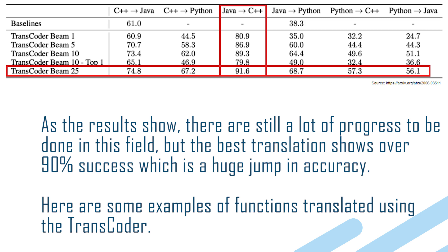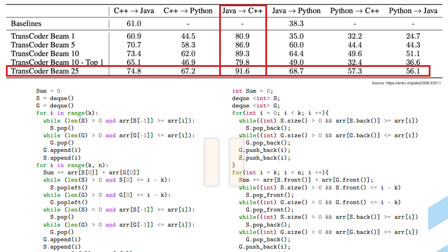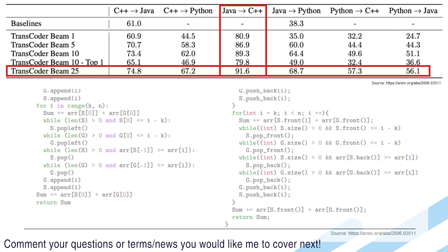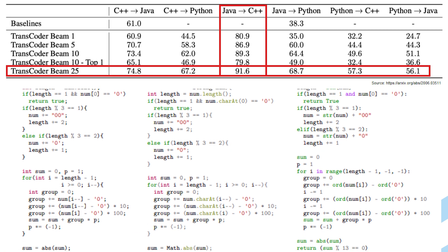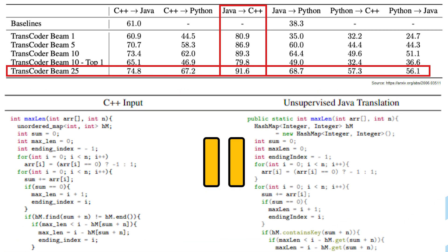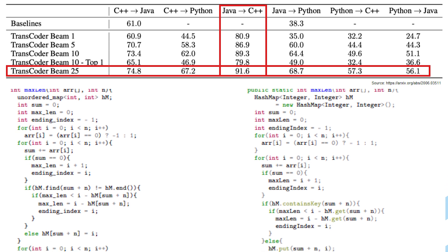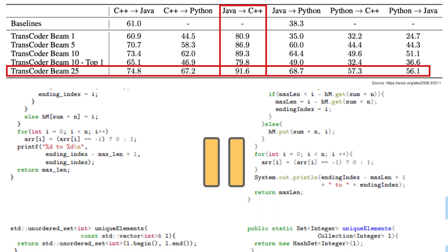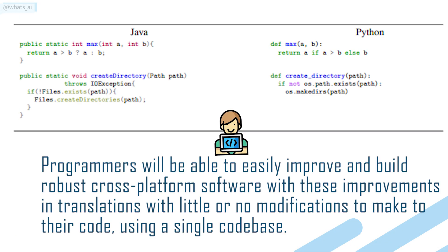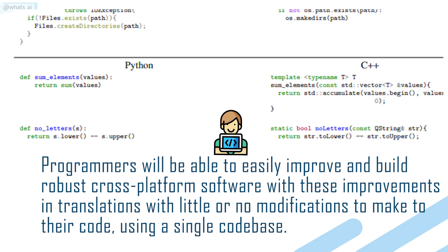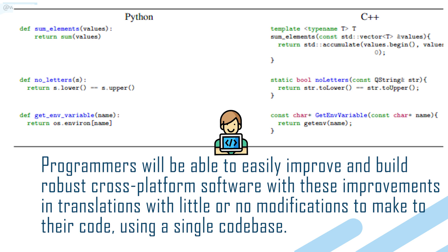Here are some examples of functions translated using the Transcoder. I invite you to pause the video and take a deeper look at these examples. Programmers will be able to easily improve and build robust cross-platform software with these improvements in translation, with little or no modifications to their code, using a single code base.